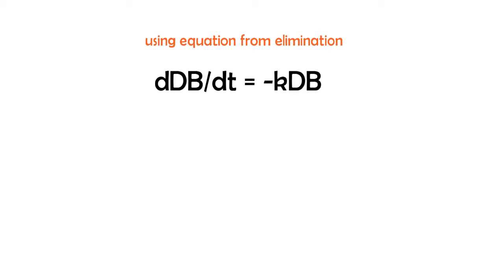So if you remember, in the elimination rate constant, we had an equation like that before. So that equation, it was dDB divided by dt is equal to minus k dB. We already had this equation in the elimination rate constant, so why just not use this and get rid of it quickly?